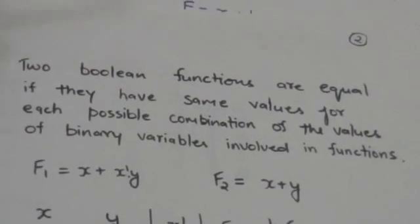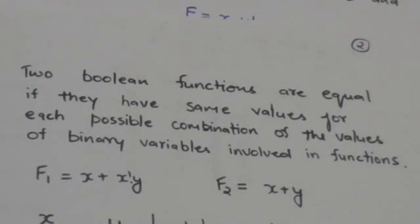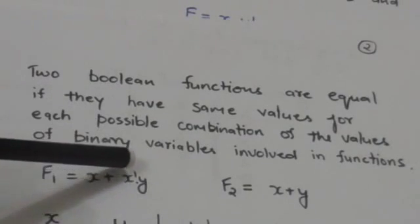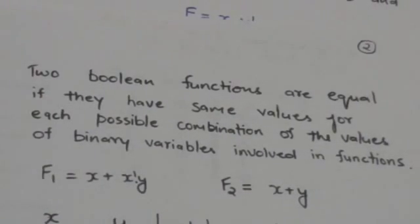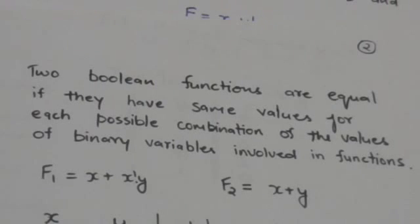Two Boolean functions are equal if they have the same values for each possible combination of the values of binary variables involved in the functions. Suppose there are two functions f1 and f2, where f1 equals x plus x-naught dot y, and f2 equals x plus y. We need to check whether these two functions are equal by making a truth table for both f1 and f2.